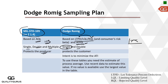The emphasis of Z1.4 or MIL STD is to protect the producer — it is more in favor of the producer — whereas Dodge-Romig tables are more in favor of the customer. The AOQL defines the average outgoing quality limit, which protects the consumer. LQL is the limiting quality level — the worst quality you could receive in exceptional cases.